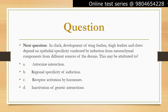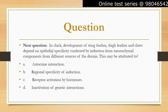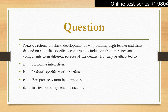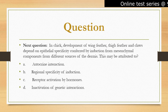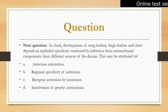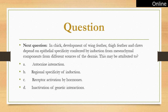Autocrine interaction (option A) refers to a signaling pathway in which a cell secretes a signal that binds to receptors on its own surface. Receptor activation by hormones (option C) involves the binding of a hormone to a receptor on the surface of a cell. Inactivation of genetic interactions (option D) refers to the disruption of normal genetic interactions between genes or proteins. None of these directly explain the regional specificity of induction observed in wing feather, thigh feather, and claw development.